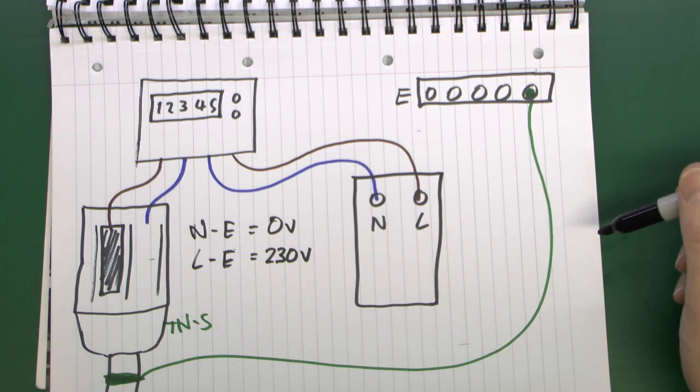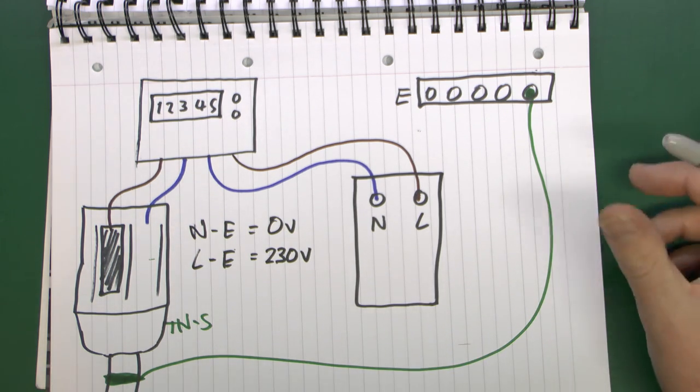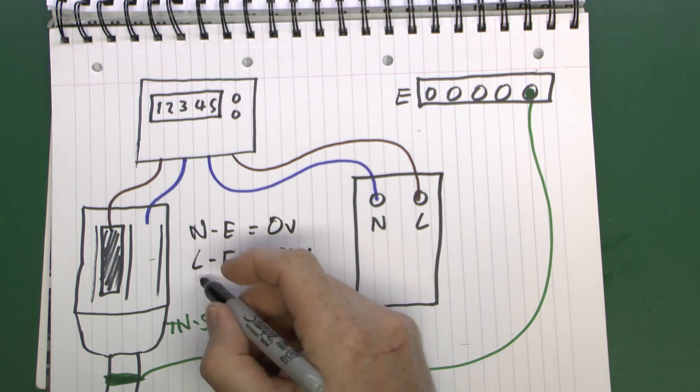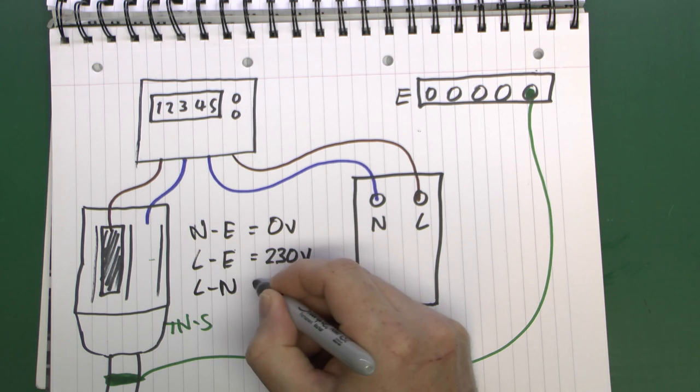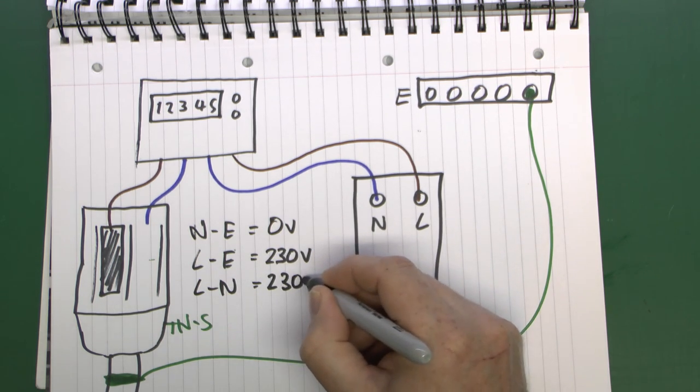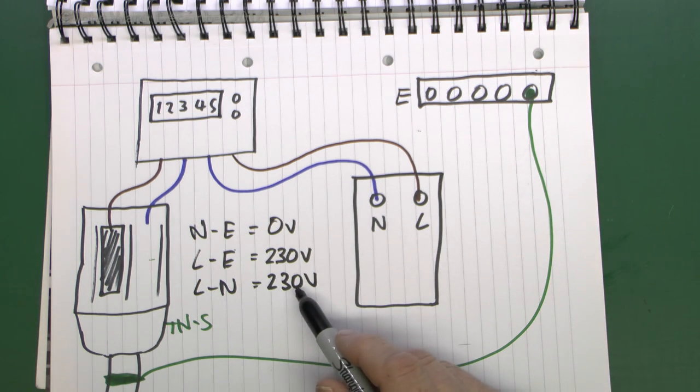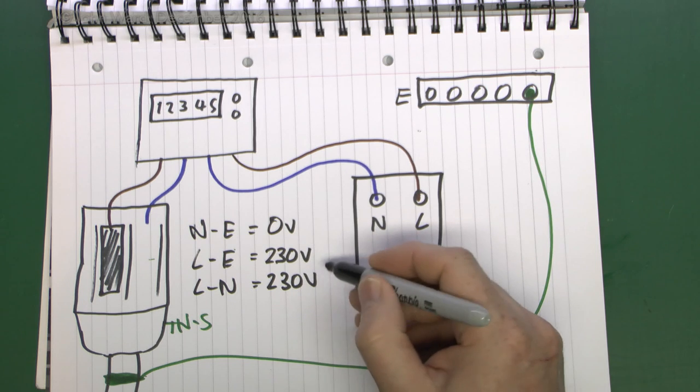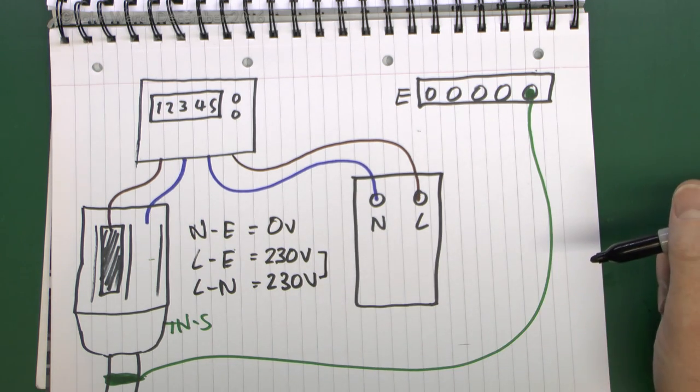In theory it could go up as high as 253, but generally that's rather too high so you might want to investigate why that was actually that high. And finally, if you check between line and neutral, then you should find pretty much the same voltage that you had there. That may vary slightly depending on the type of earth connection that you've got, but those two things should be substantially similar.